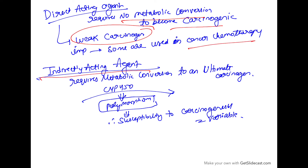Indirectly acting carcinogens require metabolic activation to become carcinogens, and this metabolic activation requires enzymes like cytochrome P450. We know that cytochrome P450 shows a lot of polymorphism; therefore, susceptibility to carcinogenesis is variable — not everybody who is exposed will get cancer.